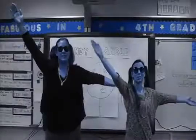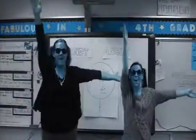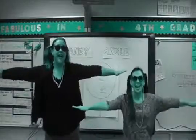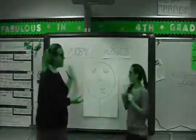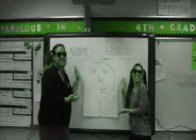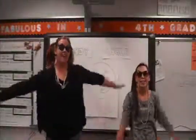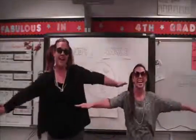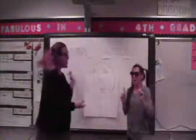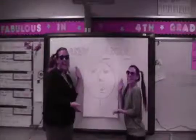The name of the angles are right, acute, obtuse. A straight angle is 180 degrees. Don't forget our friend obtuse. Right, acute, obtuse. A straight angle is 180 degrees. Don't forget our friend obtuse. Ready?